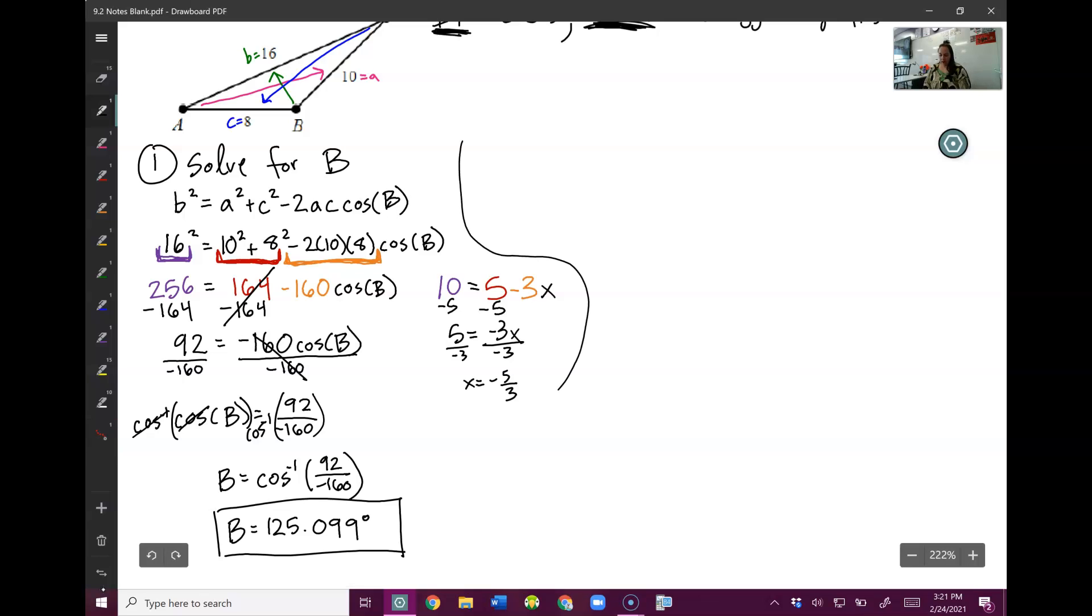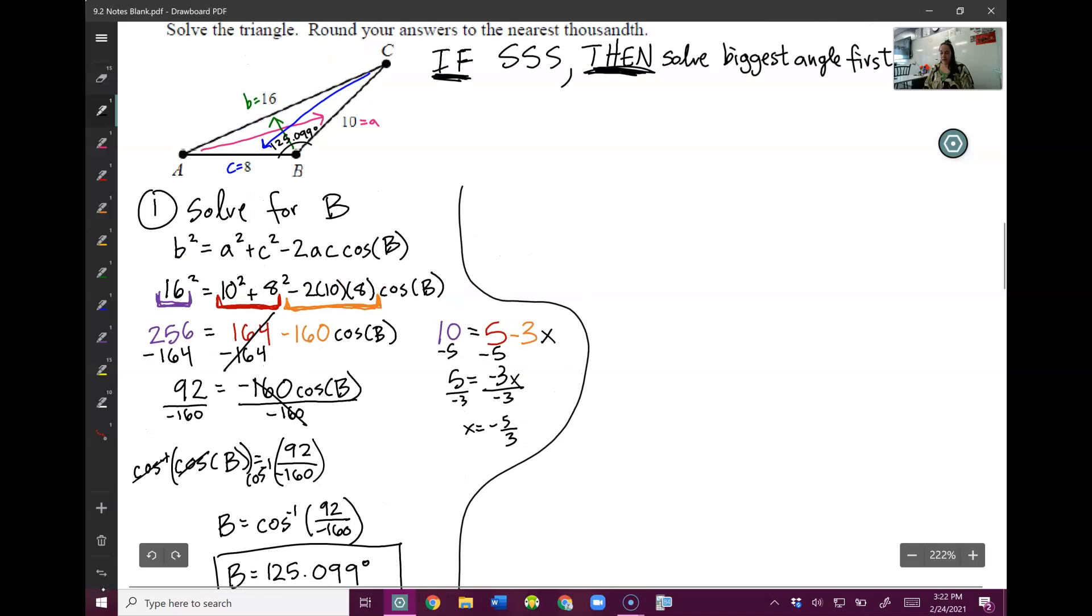So now that we have capital B, I know that capital B is 125.099. Well look at this. I now have one complete pair. Sweet. So step two, now we can use the law of sines, because I have a complete pair. We can solve for capital A or capital C. Either should give you the same answer. So actually, let's change my mind. I want to do capital A first.